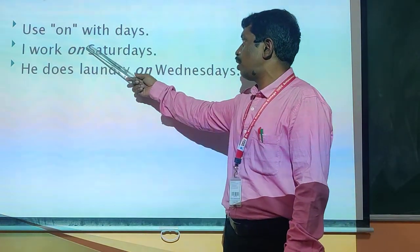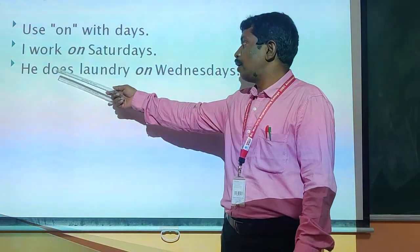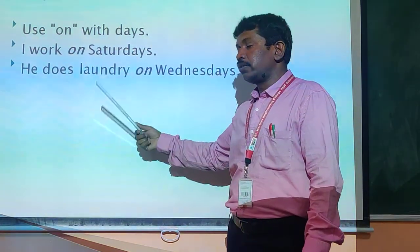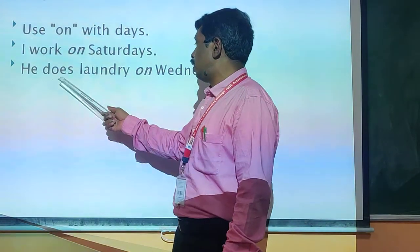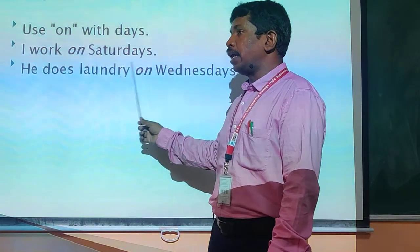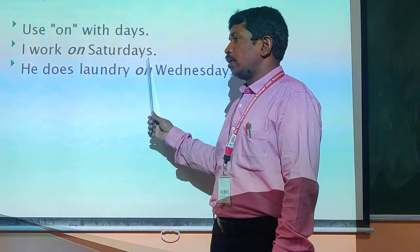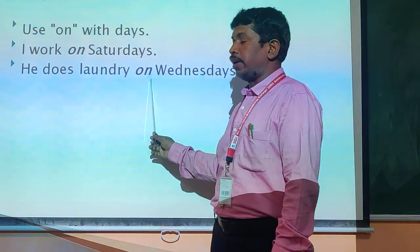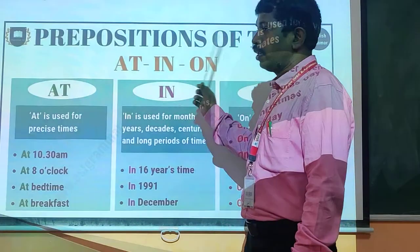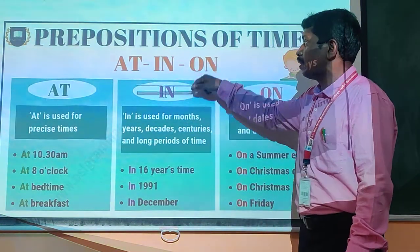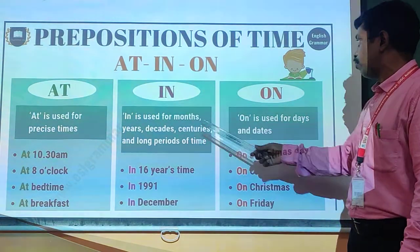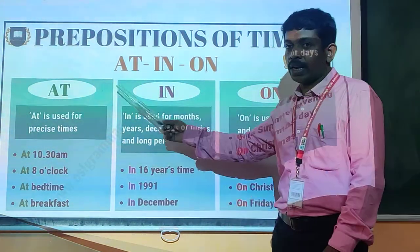Use 'on' with days. For example: I work on Saturdays, I work on Sundays. Before any day names, we have to use 'on'. He does laundry on Wednesdays only — remaining days he will not work. So 'on' is used before day names. Before years, we have to use 'in'. By seeing the examples, you can understand when to use 'at', when to use 'in', and when to use 'on'.